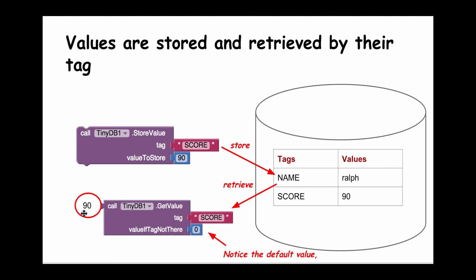When I want to retrieve the value of the person's score, I need to provide this tag and I would get back, in this case, the value 90, because SCORE is one of the tags in the database. But notice that in this case, the default value I'm using is a number.